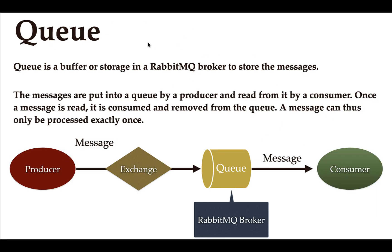Next, what is a queue? A queue is basically a buffer or a storage in a RabbitMQ broker to store messages. Whenever a producer sends a message to the RabbitMQ broker, that message will first be stored in a queue, and then the consumer will read that message from the queue. We can create any number of queues in a RabbitMQ broker.